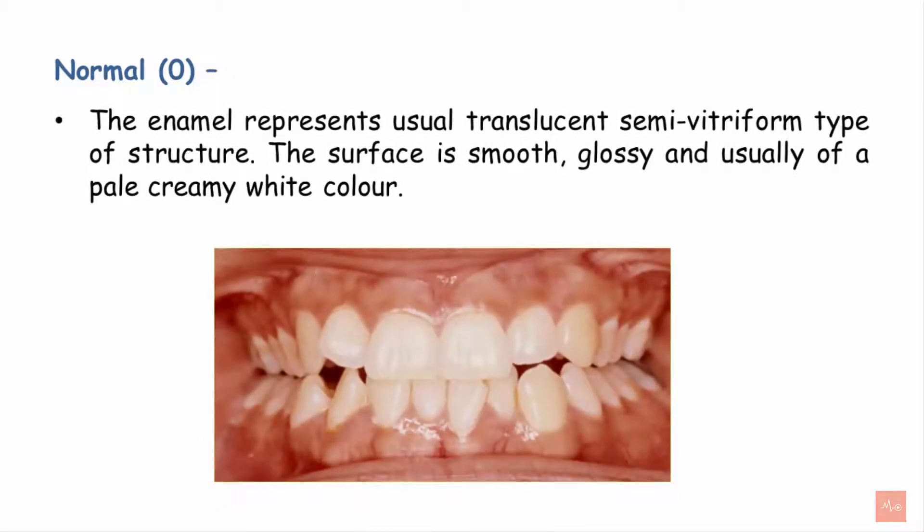Now let's look at the different scores of the modified index for recording dental fluorosis. Score 0 represents normal enamel — the enamel we usually see in the oral cavity. The description is as follows: it is enamel which represents the usual translucent semi-vitreous type of structure. The surface is smooth, glossy, and usually of a pale creamy white color.